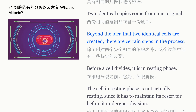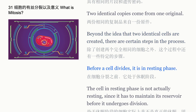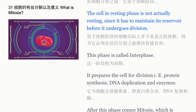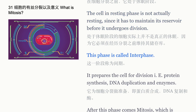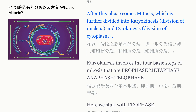Beyond the idea that two identical cells are created, there are certain steps in the process. Before a cell divides, it is in a resting phase. The cell in resting phase is not actually resting, since it has to maintain its reservoir before it undergoes division. This phase is called interphase. It prepares the cell for division — including protein synthesis, DNA duplication, and enzyme production.